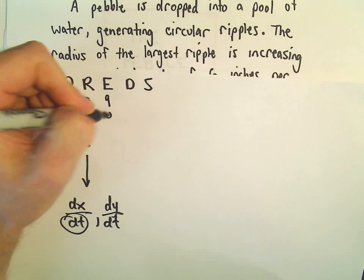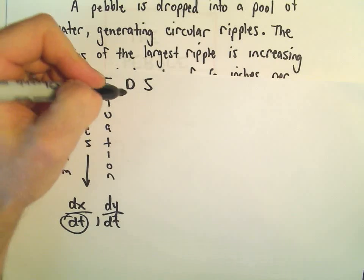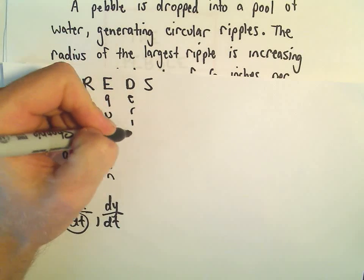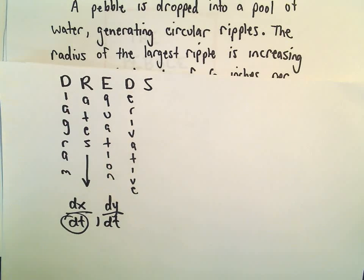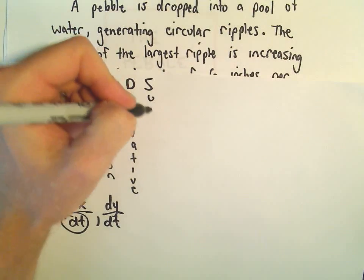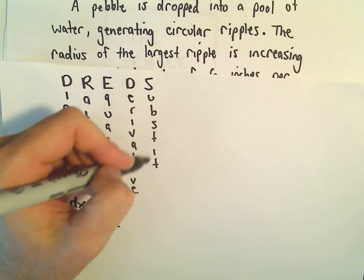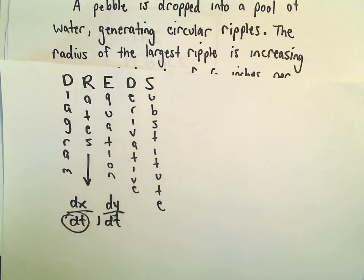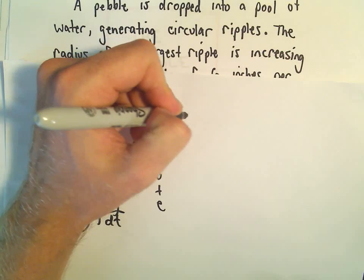The E stands for come up with an equation. The D stands for take a derivative. Again, we often have to use implicit differentiation when we do this. And the last thing is to substitute. Substitute in the specifics. I'm going to write that off to the side.